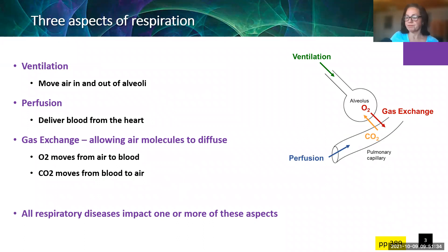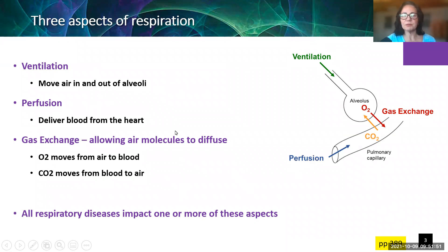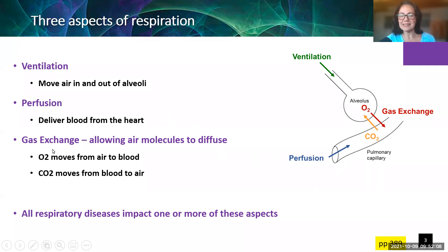Three aspects of respiration: there's ventilation, represented here in green — this is bringing air in and out of an alveolus. Perfusion, represented here in blue — that is delivering blood from the heart, from the right side of the heart. And then gas exchange: allowing gas molecules to diffuse, moving oxygen from the air into the blood, and moving carbon dioxide from the blood into the air.